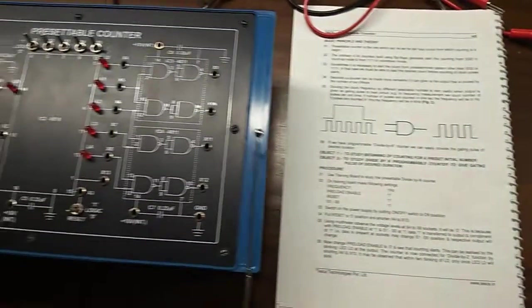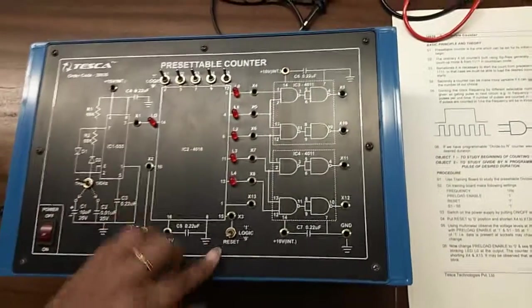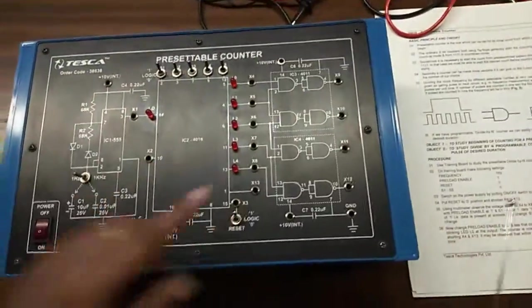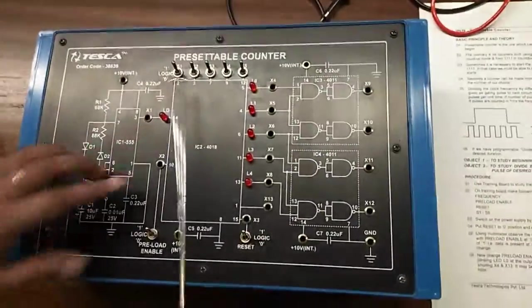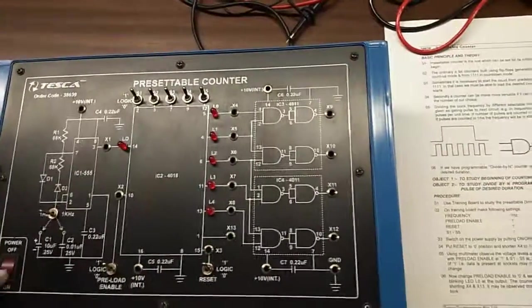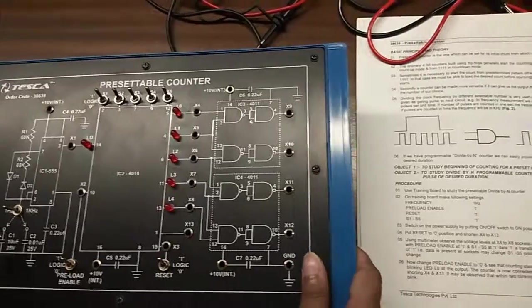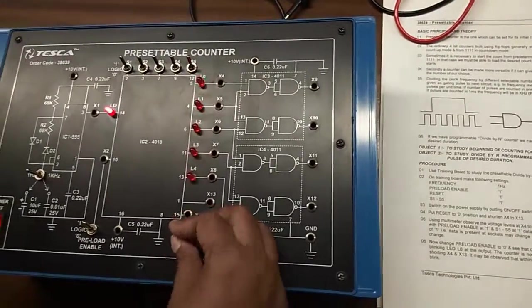First select your frequency to 1 hertz, preload enable to 1, reset to 1, and select switches S1 to S5 to 1 position. These switches are in on position. Now switch on the power supply and put the reset to 0.